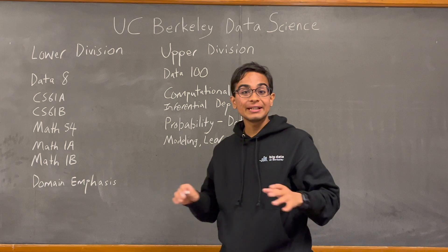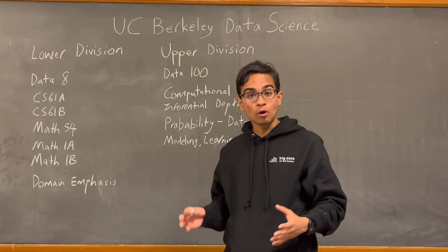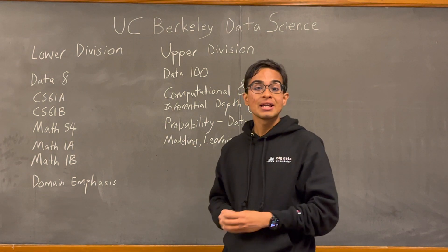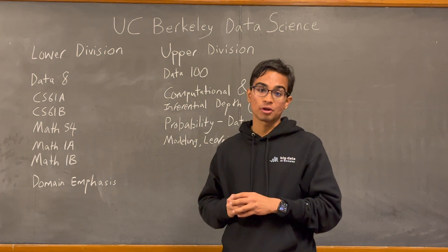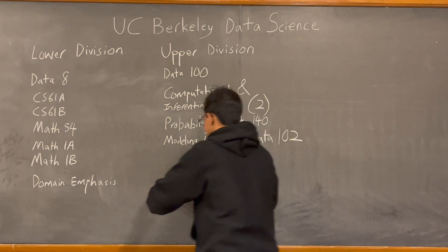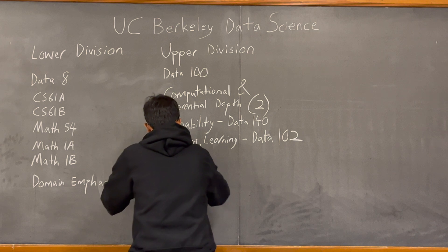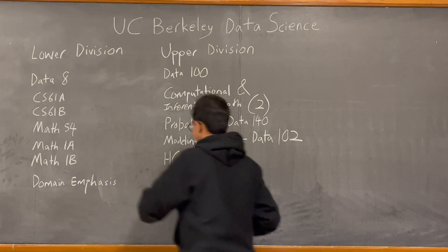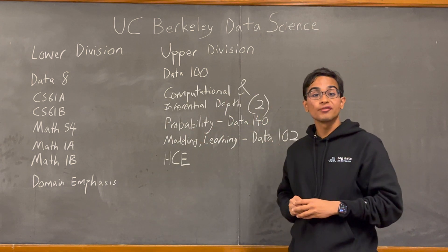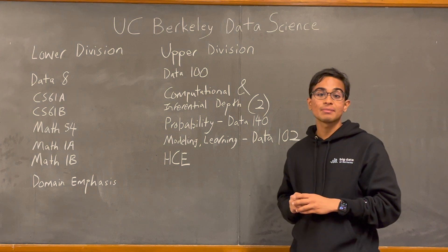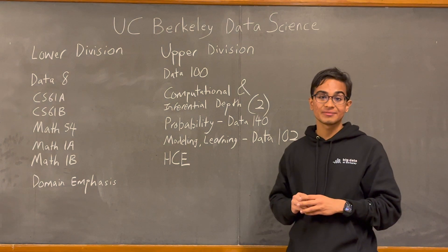Finally, we have Human Context and Ethics. The ethics requirement is very important in the curriculum, and we have this course to satisfy that requirement. Data C104 is the most popular course taken by Data Science majors to satisfy the ethics requirement.